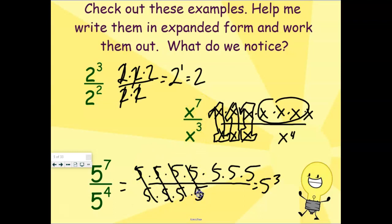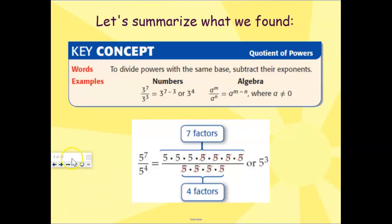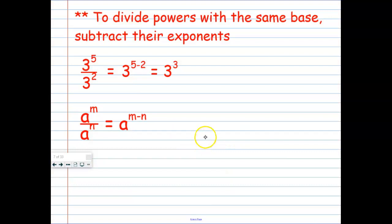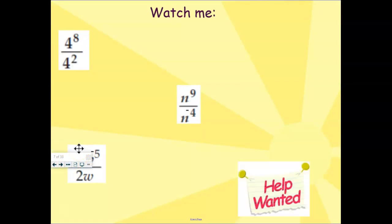Hopefully, you notice that these canceling each other out equates to the same thing as the exponents being subtracted. So 3 minus 2 is 1, 7 minus 3 is 4, 7 minus 4 is 3. So when we're dividing these, and they have the same base, we're just going to simply subtract the exponents. If we write it algebraically, A to the M over A to the N is the same as A to the M minus N power. Go ahead and pause. Copy all this business down.